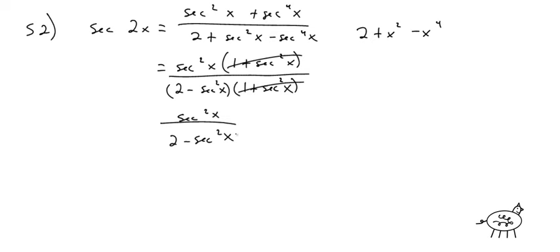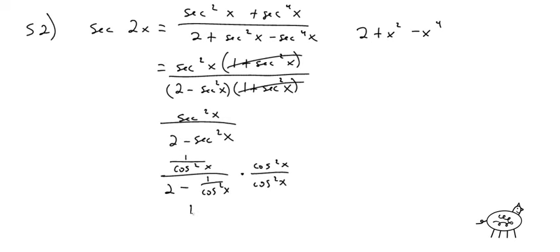If you're not sure what to do, sines and cosines look pretty good. Remember, secant of 2x is just 1 over cosine of 2x. So I rewrite as 1 over cosine squared of x divided by 2 minus 1 over cosine squared of x. Multiplying both numerator and denominator by cosine squared of x gives 1 on top and 2 cosine squared of x minus 1 on the bottom. You should recognize this is an identity.